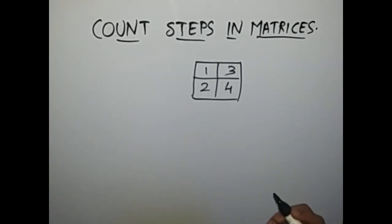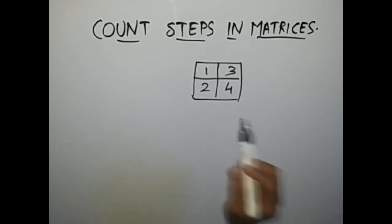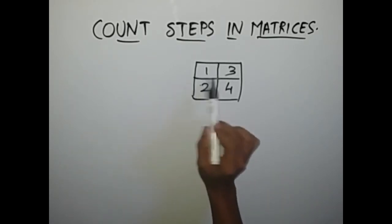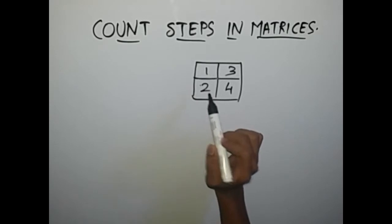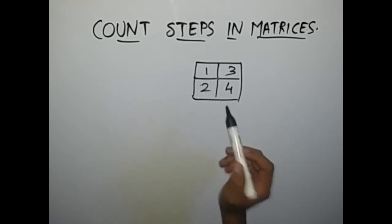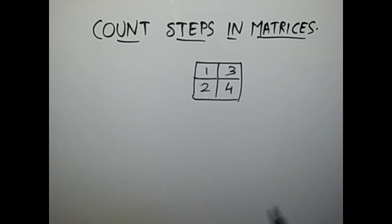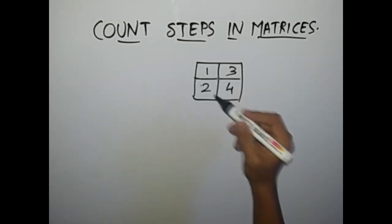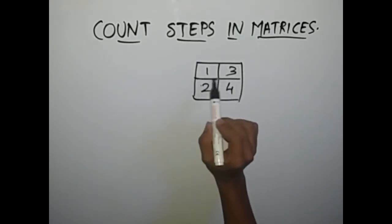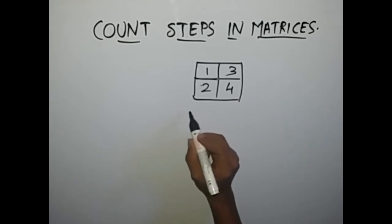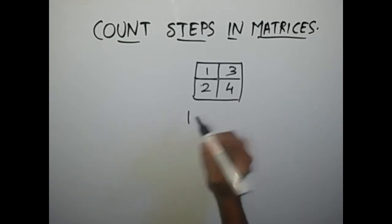We can only travel through the boxes if they share an adjacent edge between them. Like we can travel from 1 to 2, but we cannot directly travel from 1 to 4. So in this example, traversing from 1 to 2 is possible because they share an adjacent edge. Total number of moves required is 1.